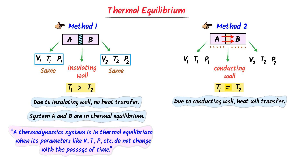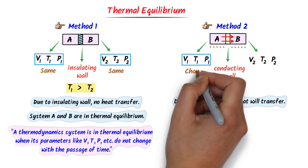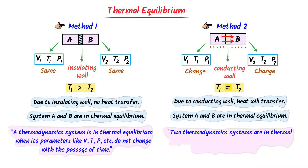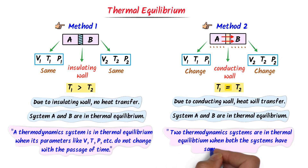For example, when the temperature of system A is 40 degrees centigrade and that of system B is also 40 degrees centigrade, heat transfer will stop and no more heat will transfer between the two systems. When system B gets heat from system A, the parameters like its volume V2, its temperature T2, and its pressure P2 will no longer remain constant — they all change. So in this case, once the temperature of both systems becomes the same and remains constant, we say that they are in thermal equilibrium.